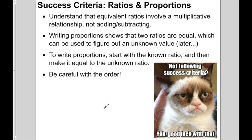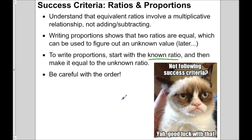Let's go over some success criteria. You need to understand that equivalent ratios involve a multiplicative relationship — not adding or subtracting. Writing proportions shows that two ratios are equal, and we'll figure out the unknown value later. To write proportions, start with the known ratio — that's important — and then make it equal to an unknown ratio. Be careful with the order; it's very important.